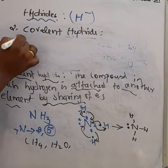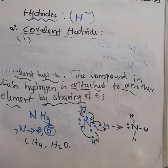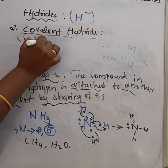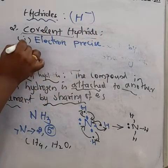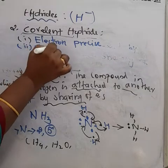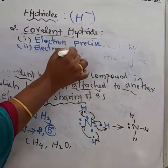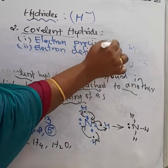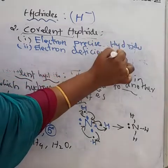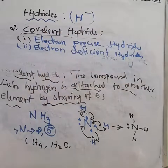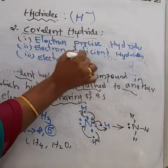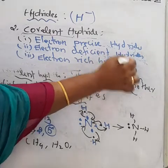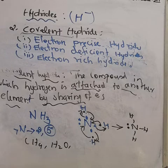Covalent hydrides can be further divided into three categories: electron precise hydrides, electron deficient hydrides, and electron rich hydrides.